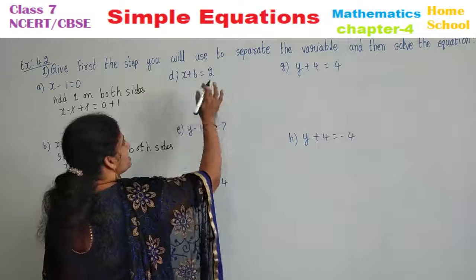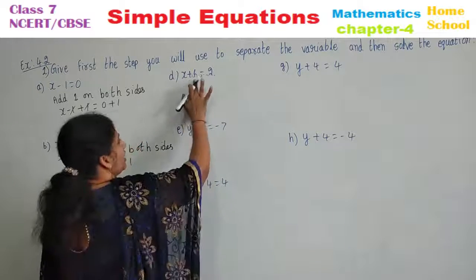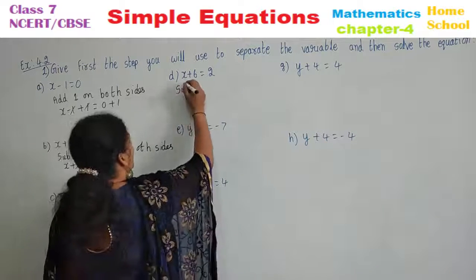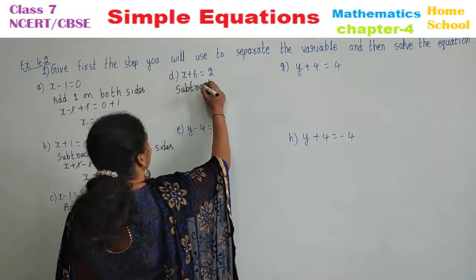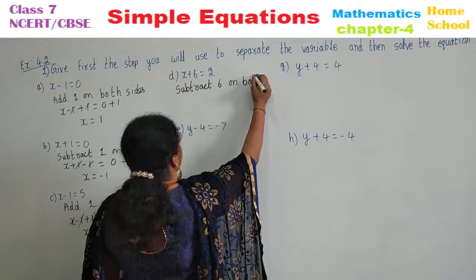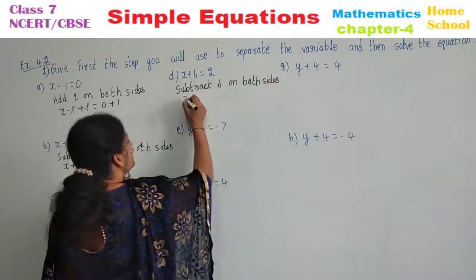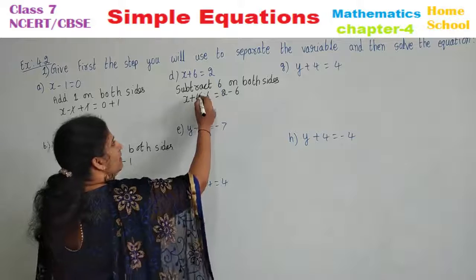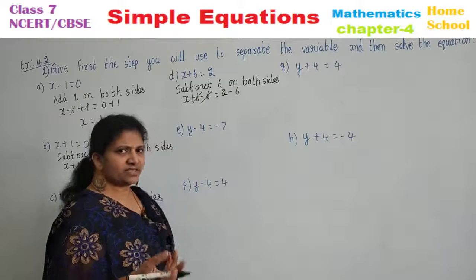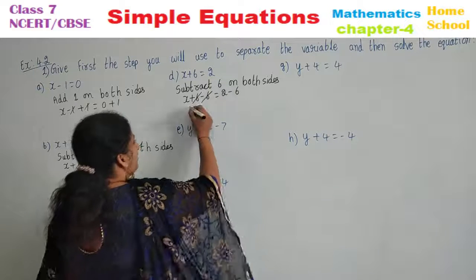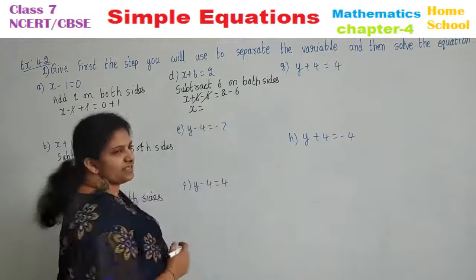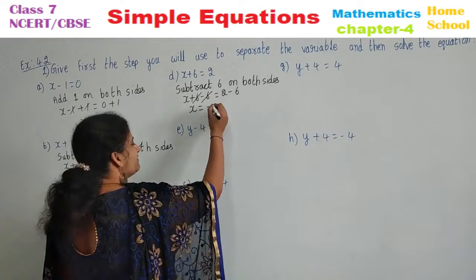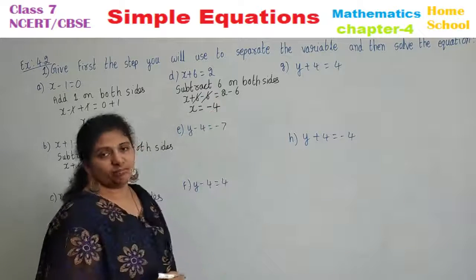See option d: x plus 6 equals 2. Other than the variable, you have plus 6; its opposite is minus 6, so subtract 6 on both sides. x plus 6 minus 6 equals 2 minus 6; plus 6 minus 6 cancels. Now 2 minus 6 — you cannot subtract 6 from 2 directly, so it takes a negative sign: 2 minus 6 equals minus 4.